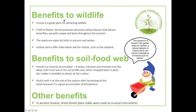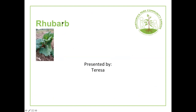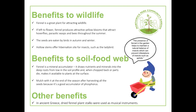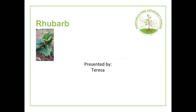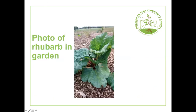Teresa lost zoom momentarily but is back. She picked rhubarb because she really likes to eat it and finds the season quite short. The photograph is one of the rhubarb plants in the community garden — there are two or three, and they seem to be thriving: they've managed to get through the drought and are looking pretty good.